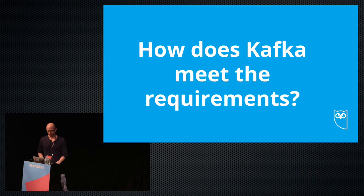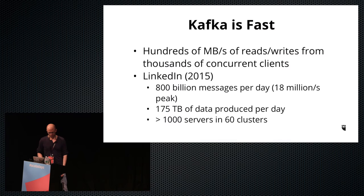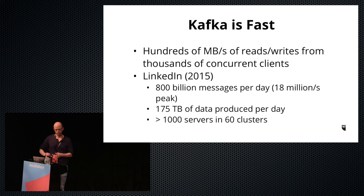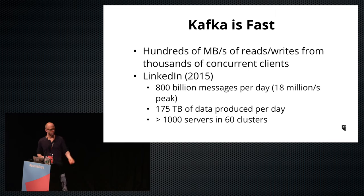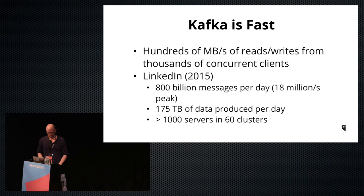Does Kafka meet the requirements I talked about earlier for a good messaging system? Kafka is really fast. It can handle hundreds of megabytes per second of reads and writes over thousands of concurrent clients. It uses immutable log files, so appending is an O(1) operation. It also uses the sendfile system call, which lets it send data directly from the OS page cache to the network card, never going into application memory. At the high end, LinkedIn published a blog post where they said they send 800 billion messages per day — 80 million messages per second at peak — and 175 terabytes of data per day over a thousand servers. At Hootsuite, we push hundreds of gigabytes per day.